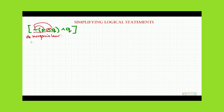After distributing the negation sign, we get a new statement: negation of P or negation of Q. Then we just copy the 'and Q' statement.